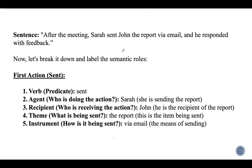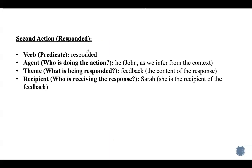Let's take one complex sentence: 'After the meeting, Sarah sent John the report via email, and he responded with feedback.' The first step is to break down the sentence and label the semantic roles. For the verb 'sent': Agent is Sarah — who is performing the action. Recipient is John — who received it. Theme is the report — the item being sent. Instrument is 'via email' — how the report was sent.